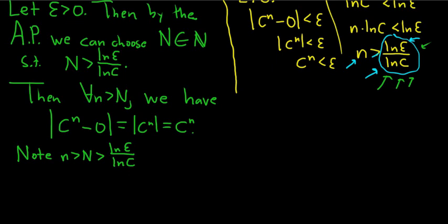So I guess we can do that by writing it like this next. So n is bigger than ln epsilon over ln c. Then we can multiply by the natural log of c. When we do that, the inequality symbol changes again. We have to keep that in mind.